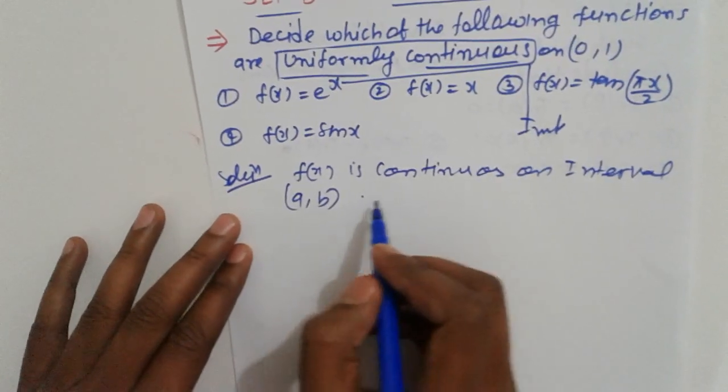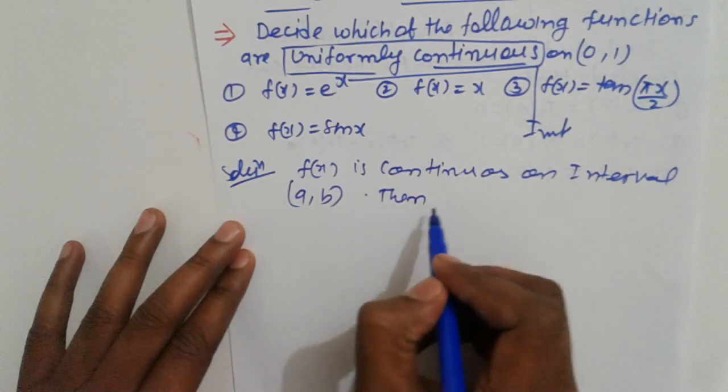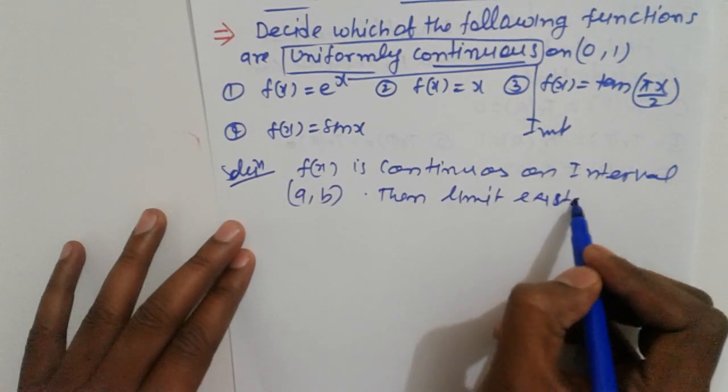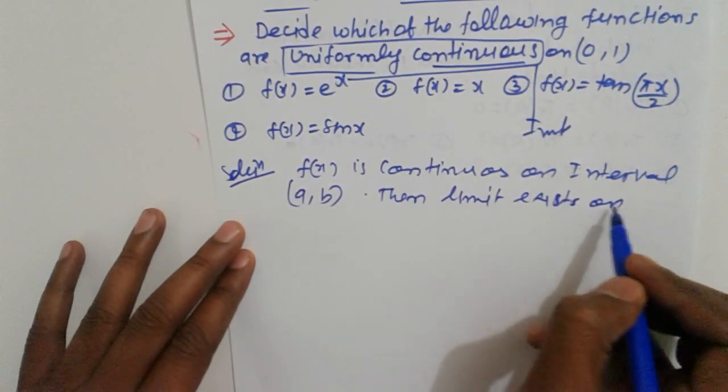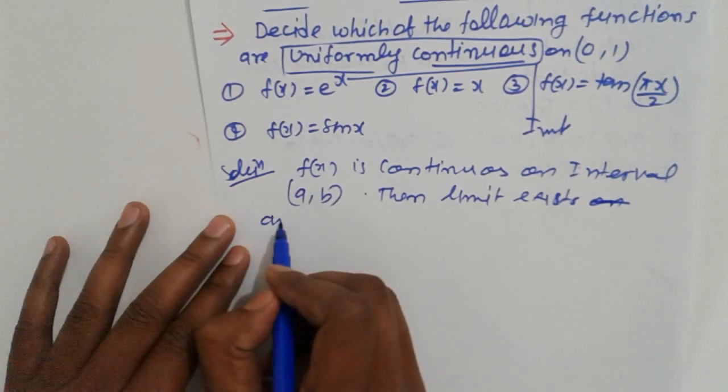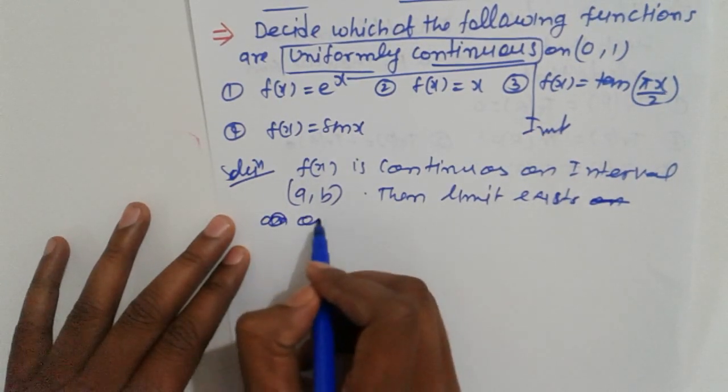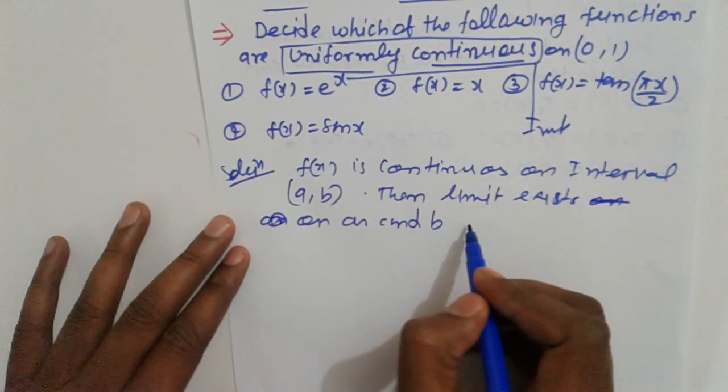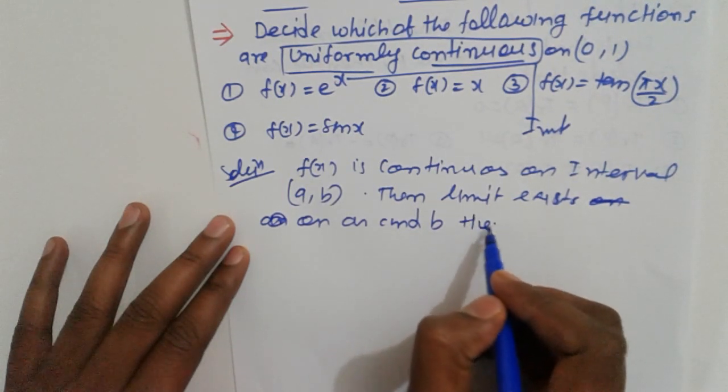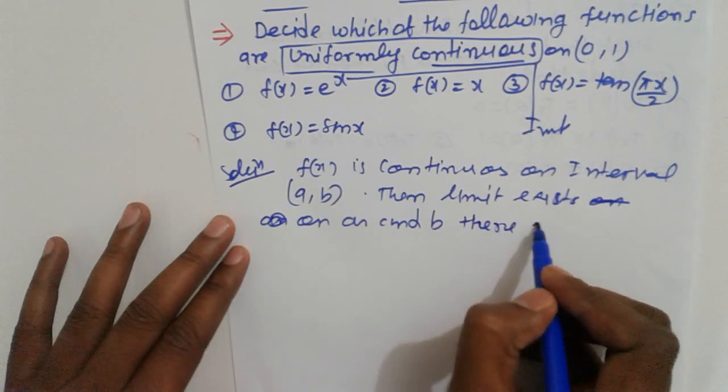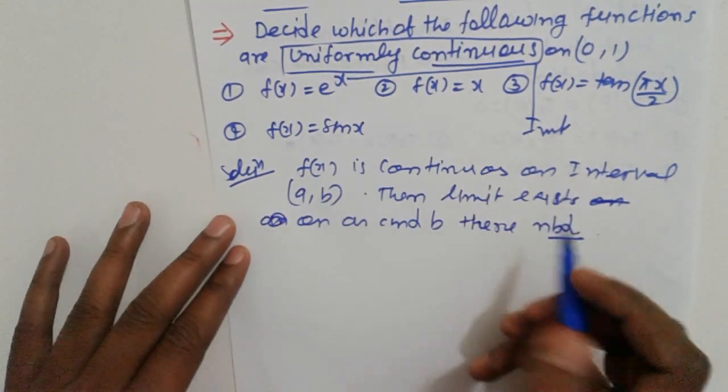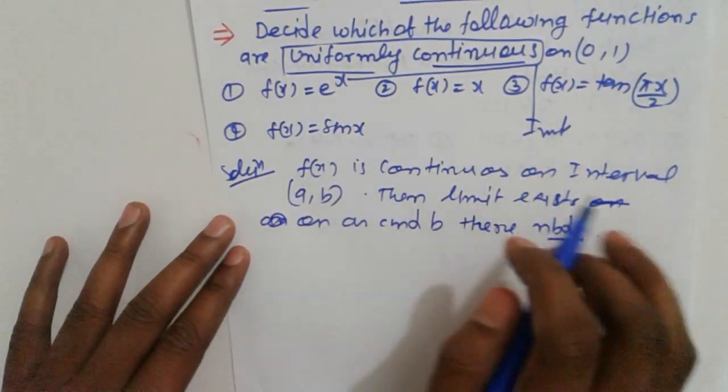Simple method reference: If f(x) is continuous on open interval (a,b), then limits exist on a and b in their neighborhood.